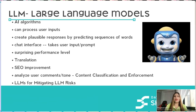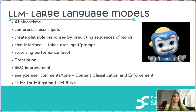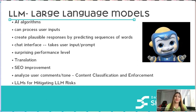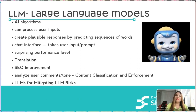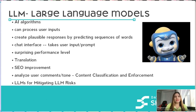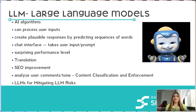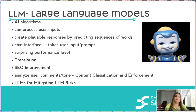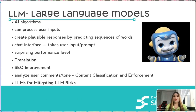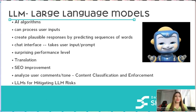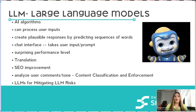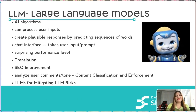So what are LLMs? LLMs are AI algorithms — large language models that have a lot of data and they can process user inputs. They can create plausible responses and predict the sequence of words. They can be used in chat interfaces, to create inputs and prompts, and have a surprising level of performance — better than human level. They are used in translation and SEO improvement.